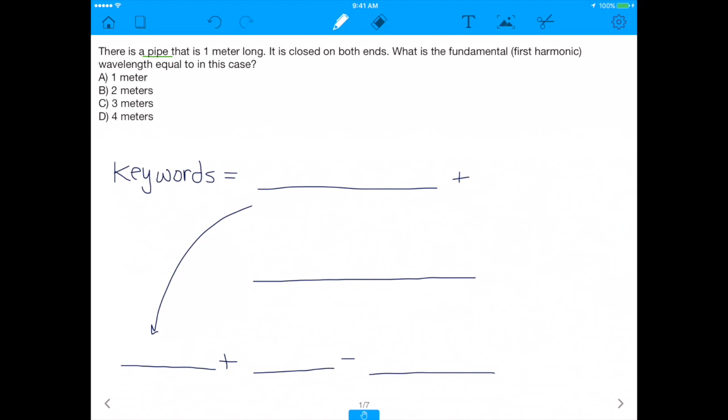It says there is a pipe that is one meter long, it is closed on both ends. What is the fundamental, aka first harmonic wavelength, equal to in this case?